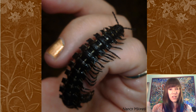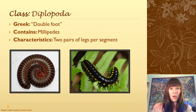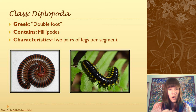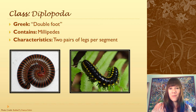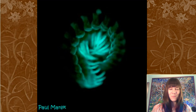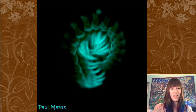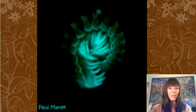Millipedes are decomposers, so they're really slow and they curl up into a ball as a defense. Some of them are brightly colored because they can have a cyanide toxin in them. And some of them glow in the dark — since they're nocturnal, this glow is telling predators at night: hey, don't eat me, I'm packing cyanide.